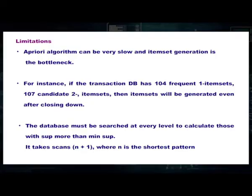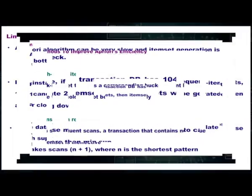The Apriori algorithm can be very slow and item set generation is the bottleneck. For instance, if a transaction database has 10^4 frequent one-item sets and 10^7 candidate two-item sets, generation will take significant time. The database must be searched at every level to calculate items with support above minimum support, requiring nearly n+1 scans where n is the length of the shortest pattern.